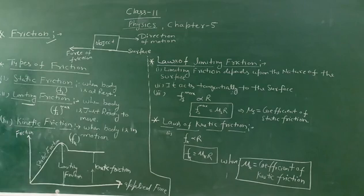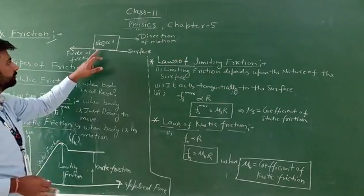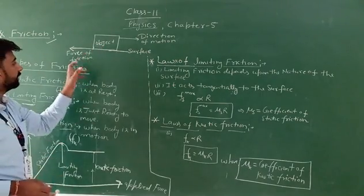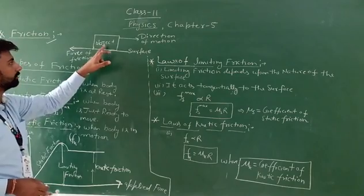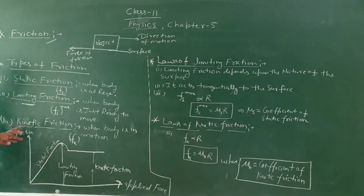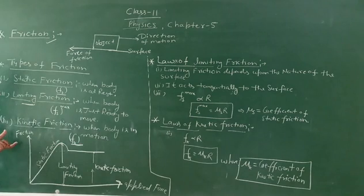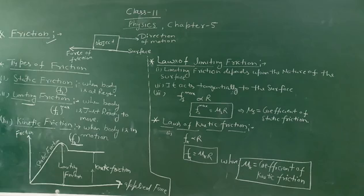Next is kinetic friction. When the body is in a state of motion, the friction force between the contact object and surface is known as kinetic friction, which is denoted by F. There is a graph between static friction, limiting friction, and kinetic friction.